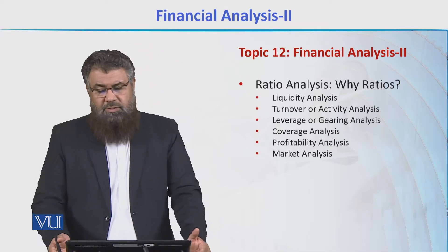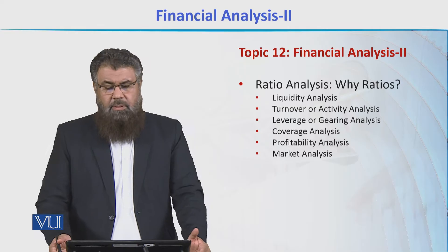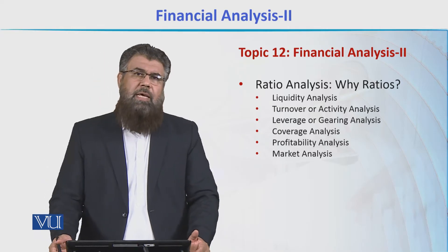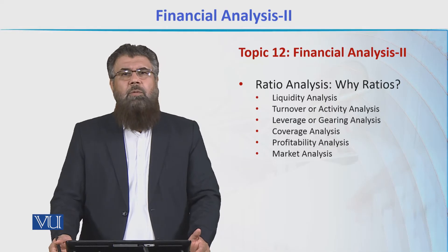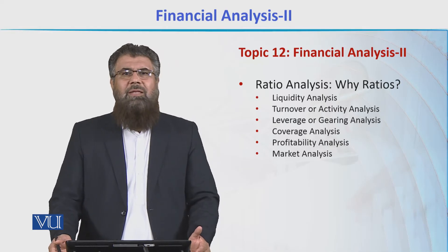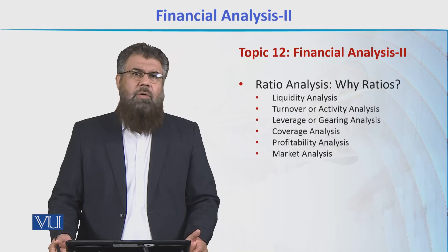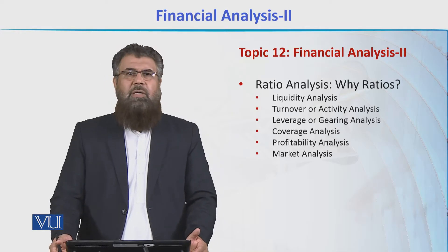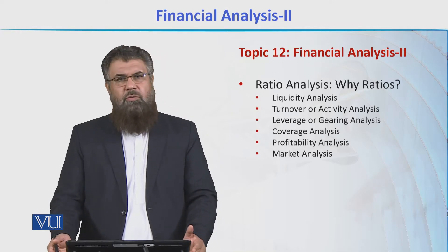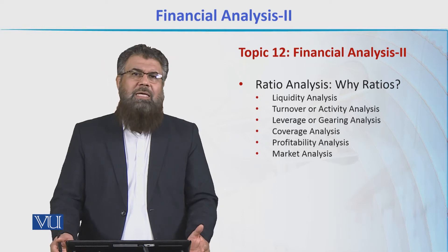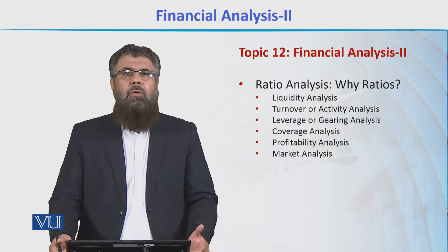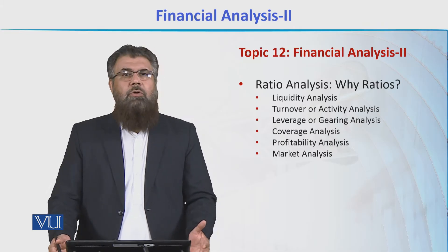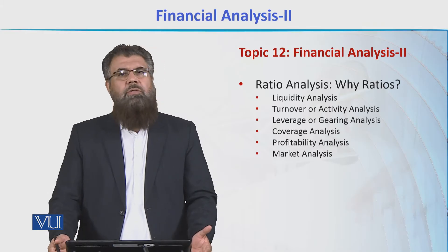Have a look at these ratios. Number one: liquidity ratios — the analysis of a company related to its liquidity. Liquidity means how many assets the company has that can be quickly converted into cash. The ratios that tell us about liquidity include the current ratio, quick ratio (also called the acid test ratio), and the cash ratio.